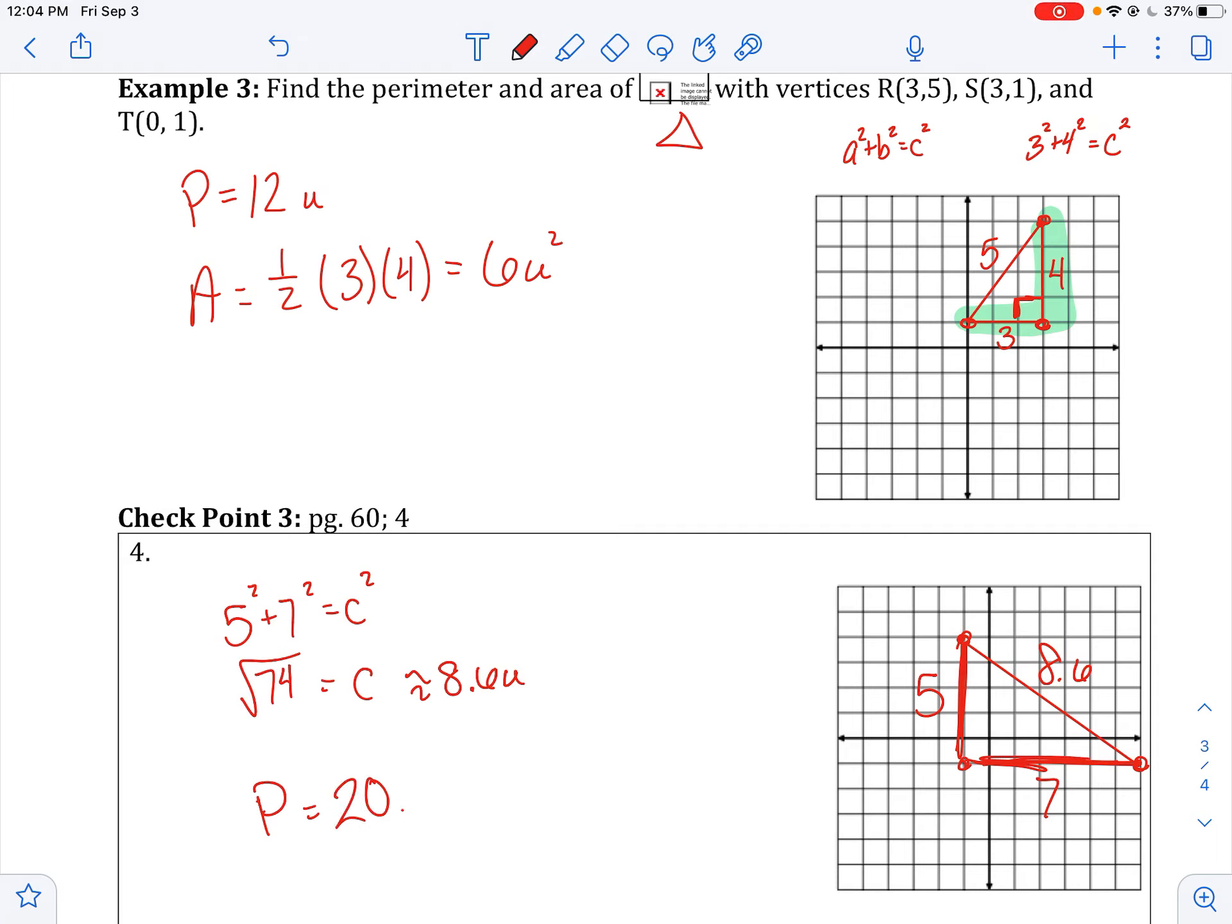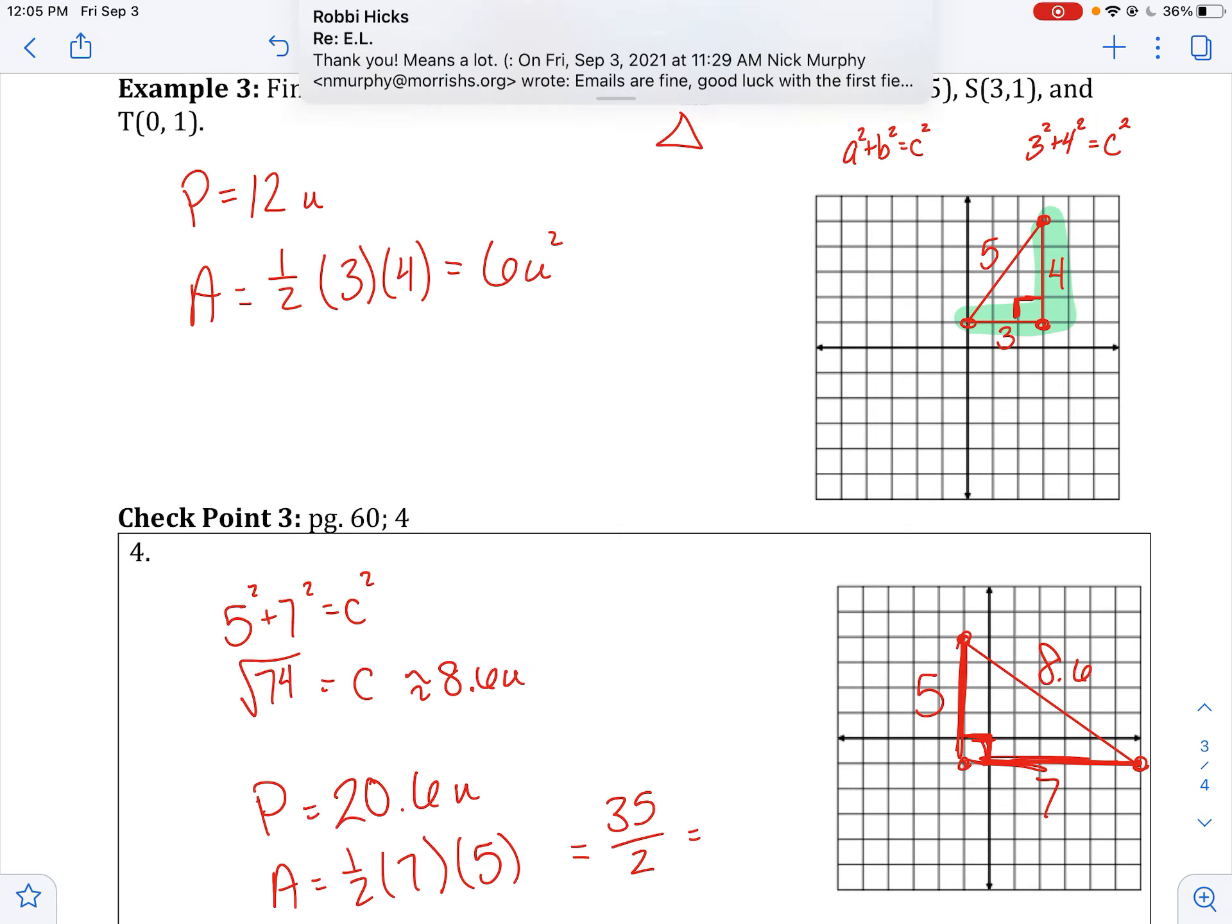And then to find your area, you would do 1 half base times height. And these are at a right angle, 5 and 7, which would be 35 divided by 2, or 17.5 square units.